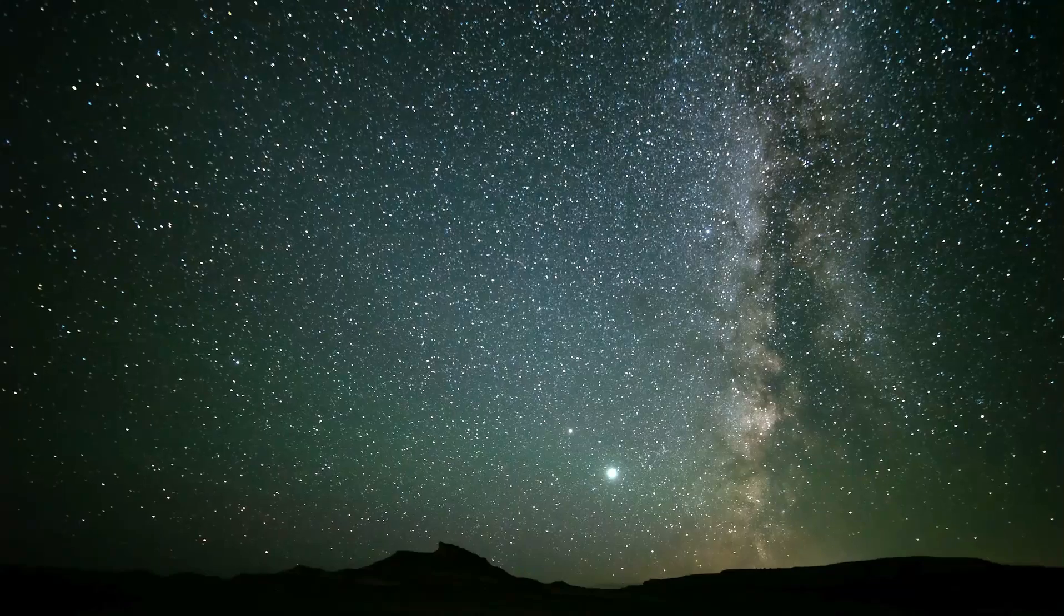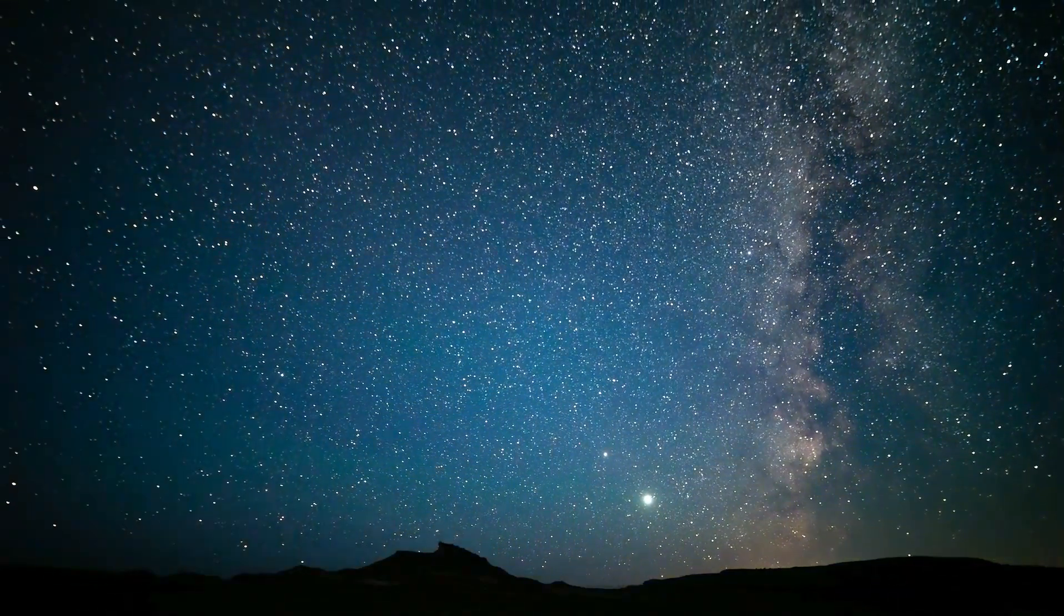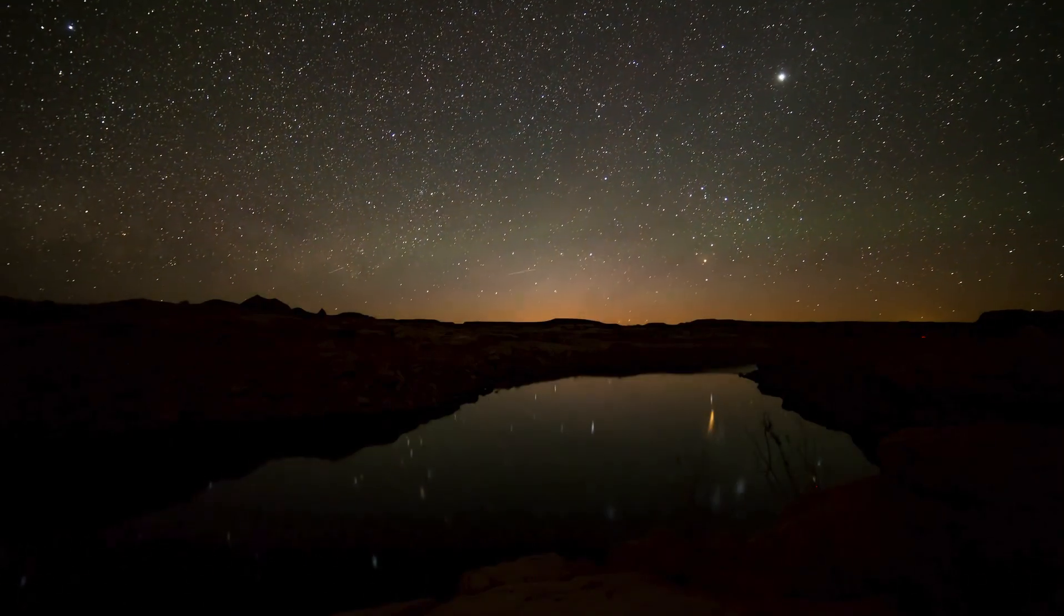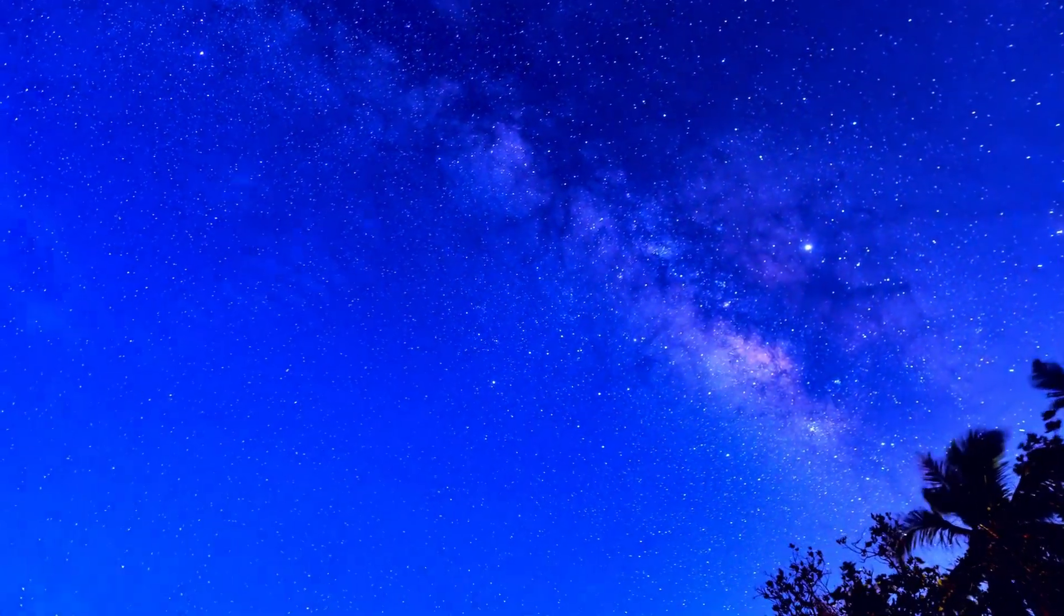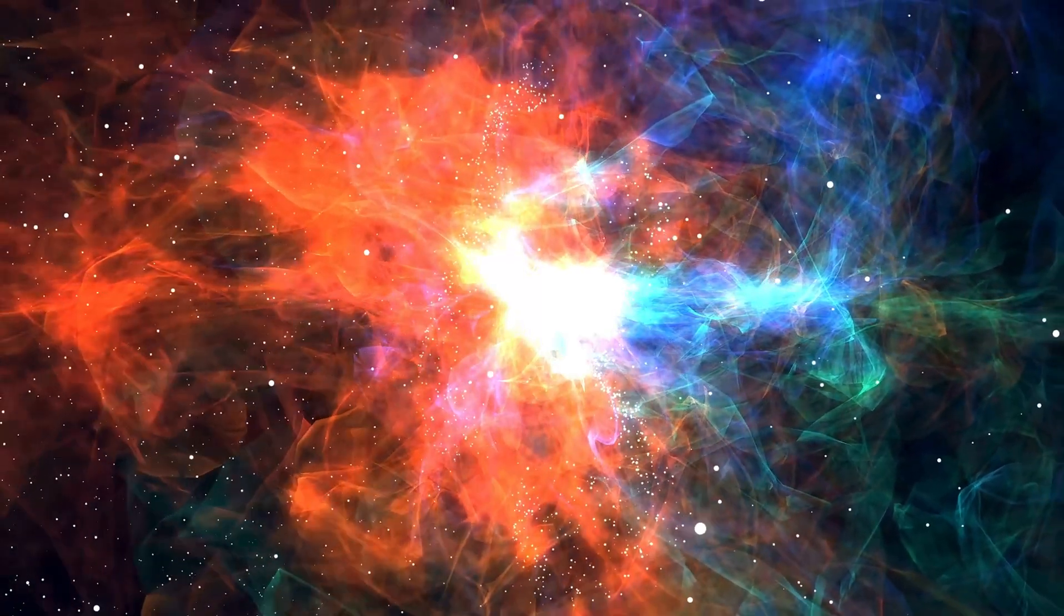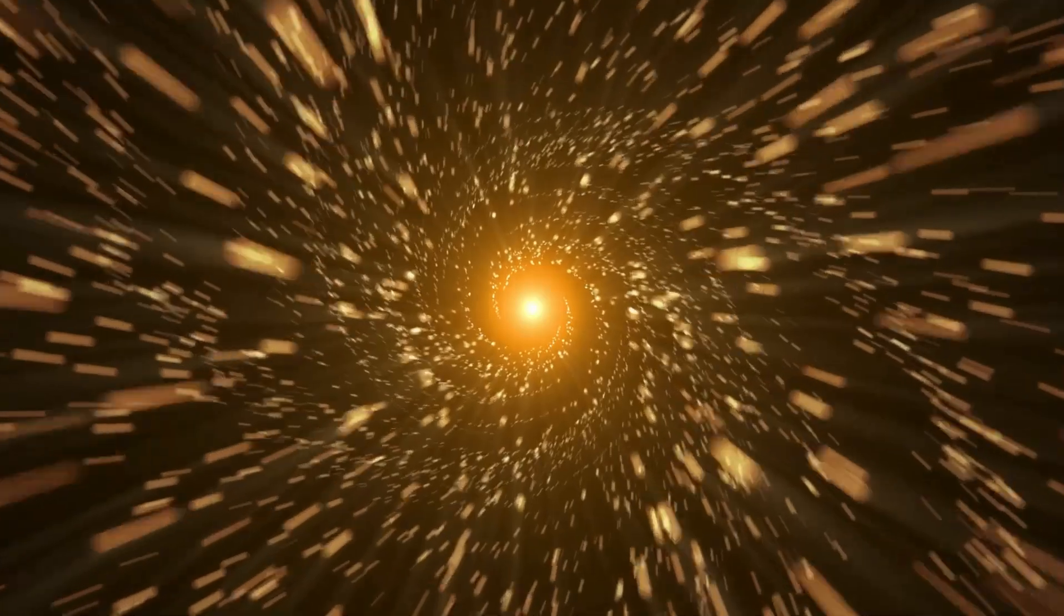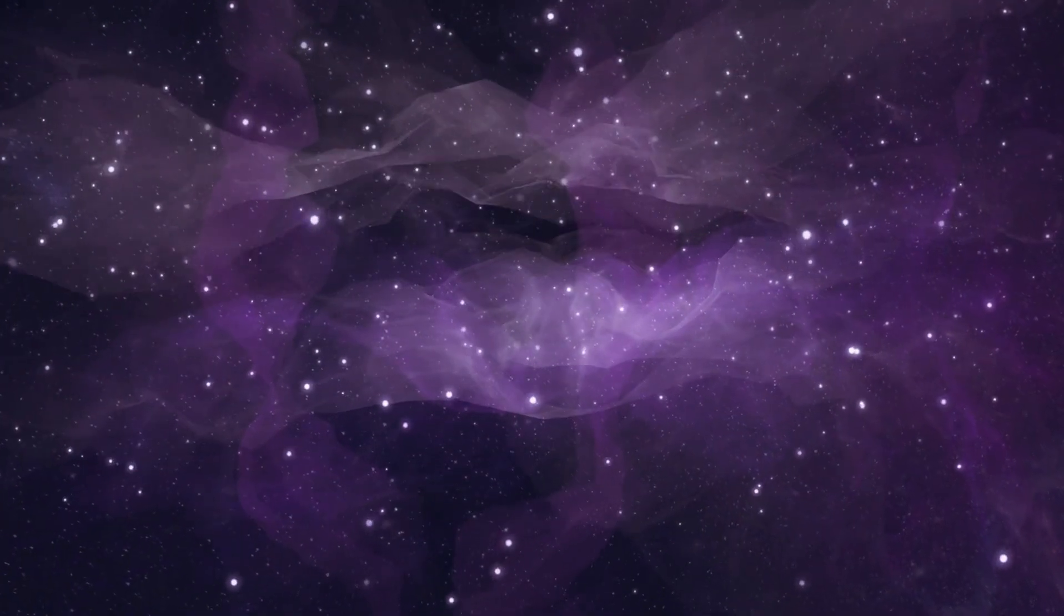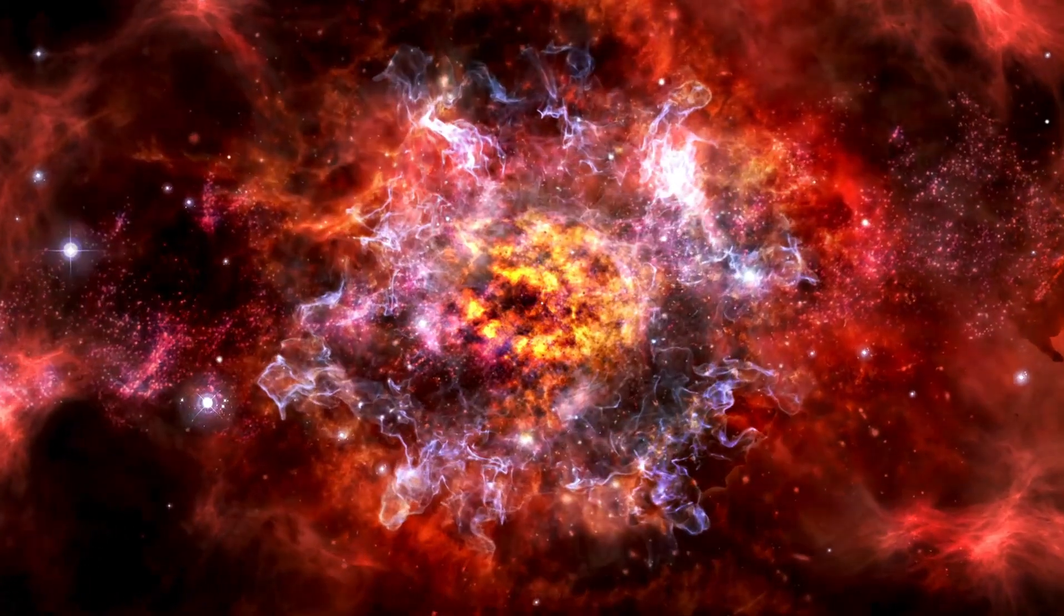Stars can be split into categories based on how much bling or heavy elements like iron they have. Our sun is a bit of a metal head, belonging to population 1 stars. Methuselah star, on the other hand, is like an old-school rock star from population 2, rocking fewer heavy elements. It's this stellar bling, or lack thereof, that helps astronomers play cosmic archaeologists, deciphering the age tales of these celestial beings.